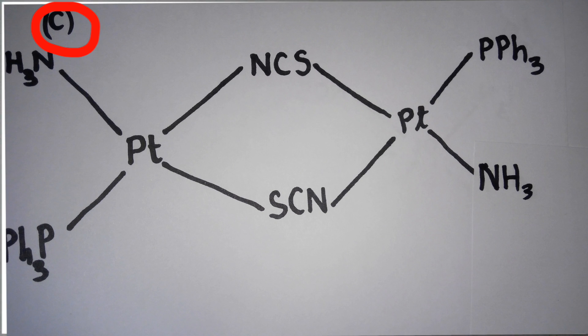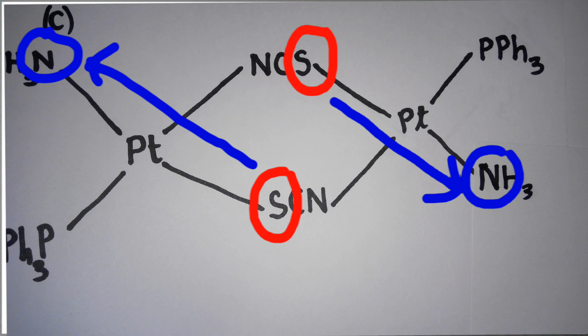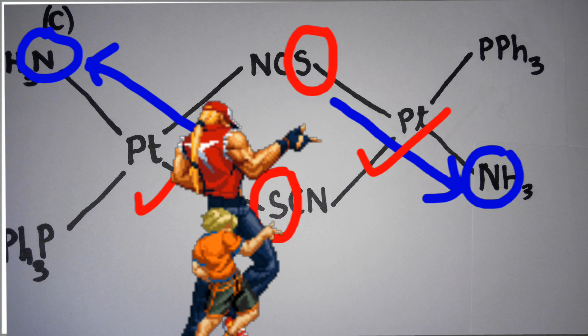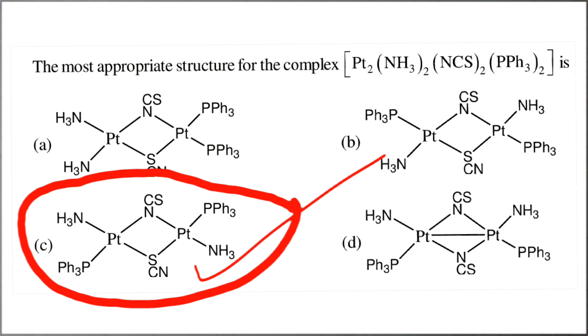In option C, both of these sulfur are trans to these nitrogen. Therefore, it will form a stable complex. Therefore, option C is the right choice.